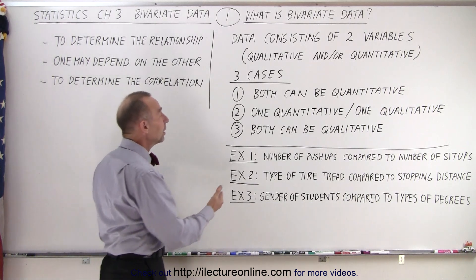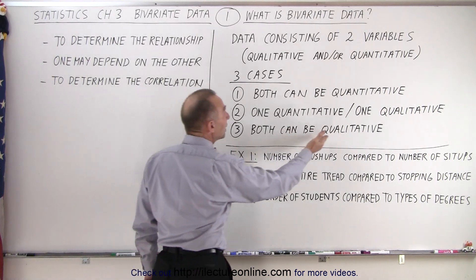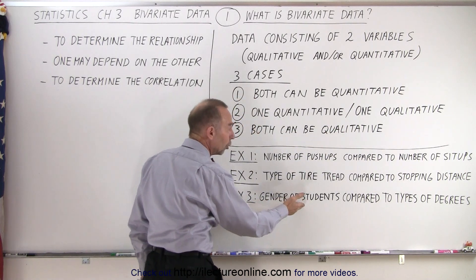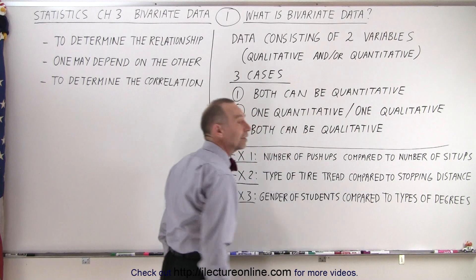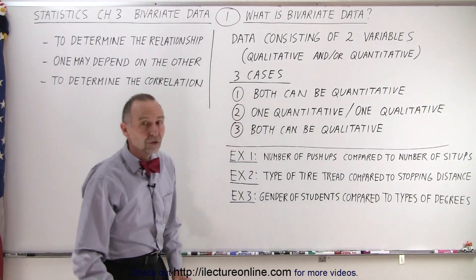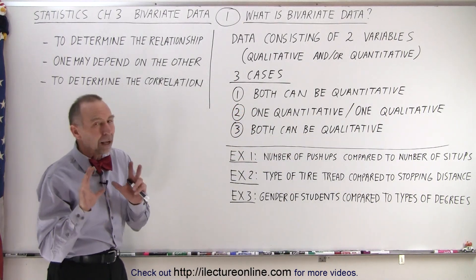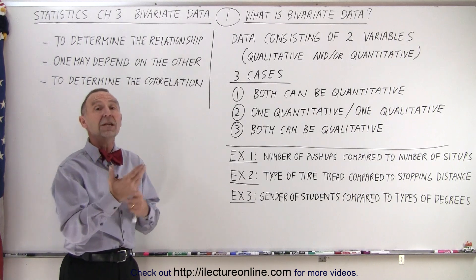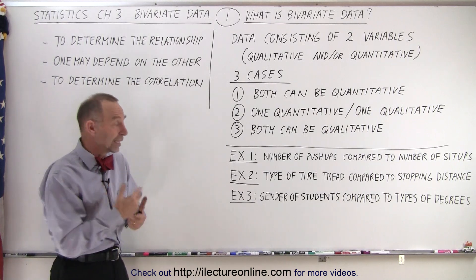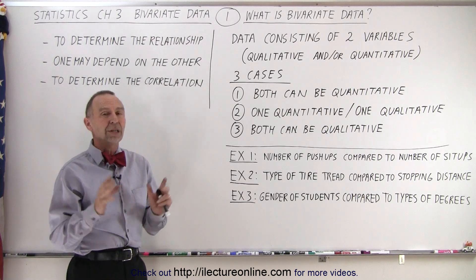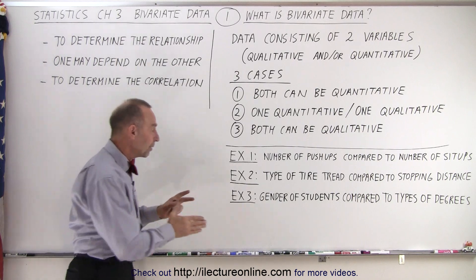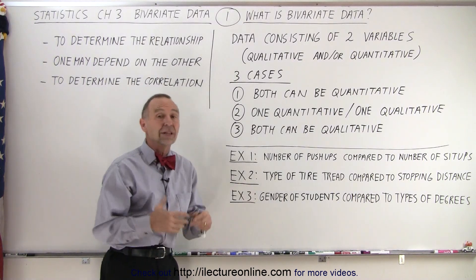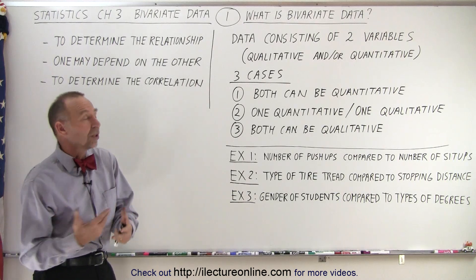And thirdly, we could be dealing with both variables being qualitative. For example, we can compare the gender of students to the types of degrees that they get — there's no quantitative variable there. It might seem confusing because you might think about how many of each, but it's essentially comparing gender to degree type, so that's considered both qualitative.